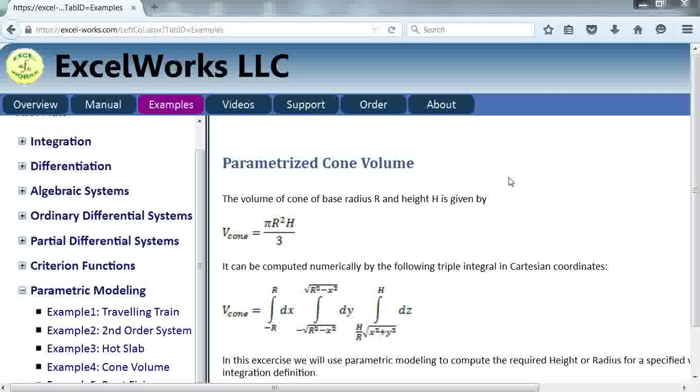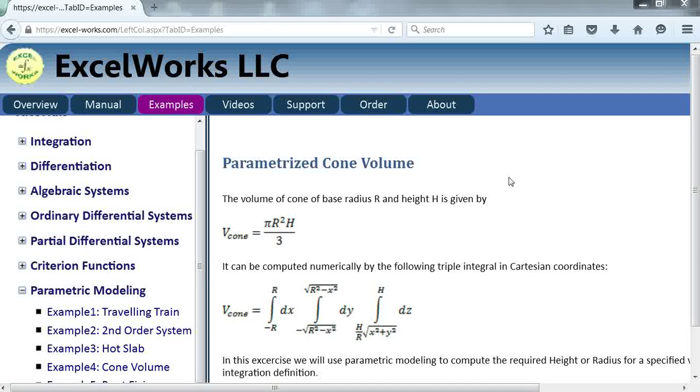We do that by setting up constraints in the solution and then finding optimal values for our problem parameters to satisfy these constraints. In this video, we will demonstrate how to set up a simple parametric problem for a triple integral that computes the volume of a cone, as you see here.